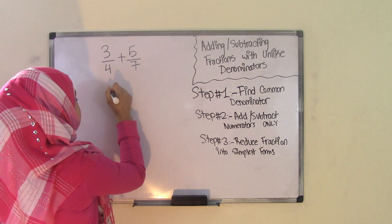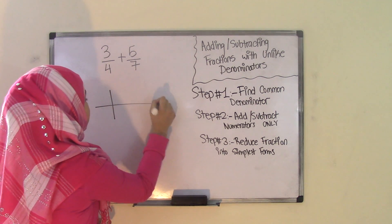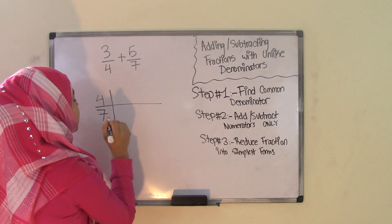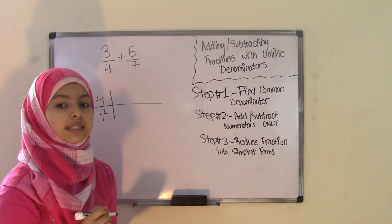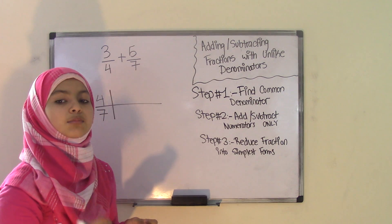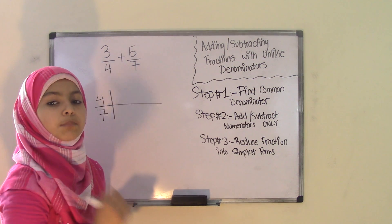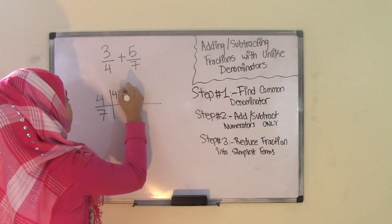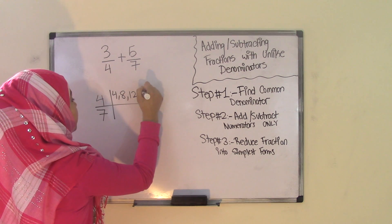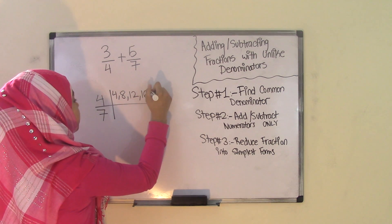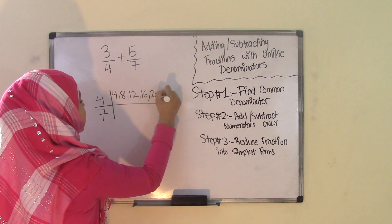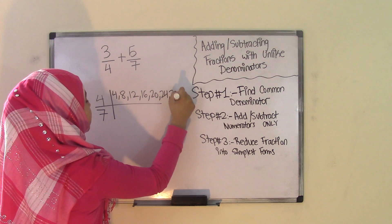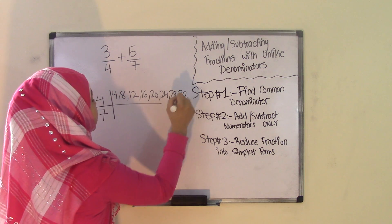All you have to do is make a table like this and list the two numbers — in this case, 4 and 7. Now list the multiples of each number until you find the smallest number common between both. So: 4 times 1 is 4, 4 times 2 is 8, 4 times 3 is 12, 4 times 4 is 16, 4 times 5 is 20, 4 times 6 is 24, 4 times 7 is 28, 4 times 8 is 32. I'll stop here.